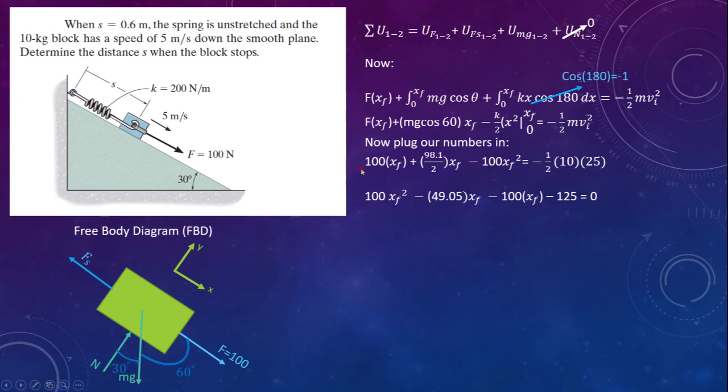So, on this side, we just rearrange it a little bit by multiplying a negative through. So, now this has become negative, this has become negative, and this is now positive. On this side, it would be negative 1 half times 10, which would be 5. Now, we have 5 times 25.